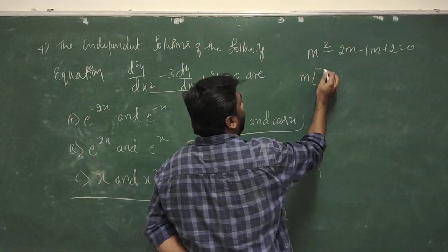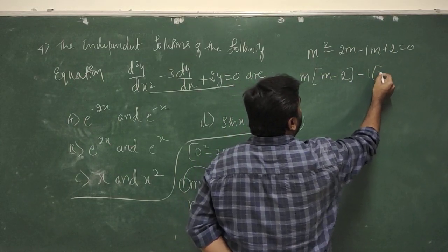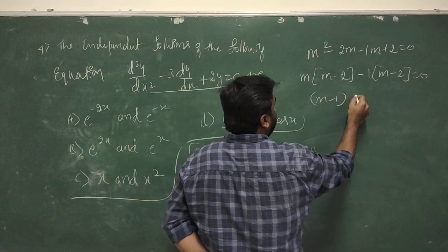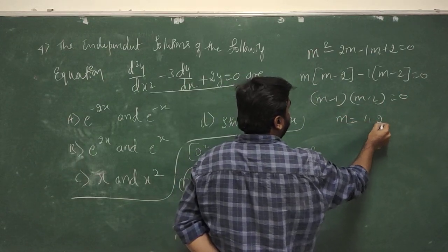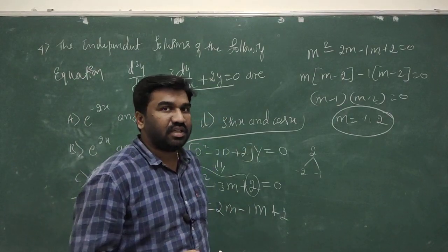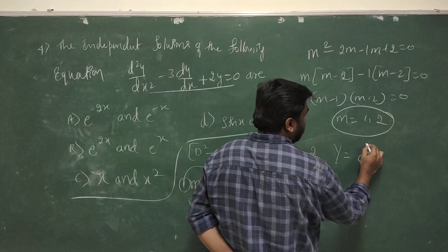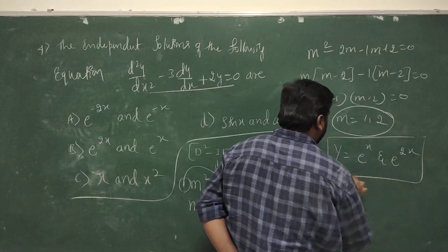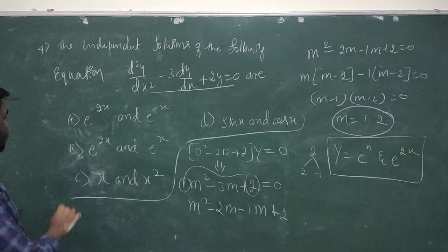This gives (m minus 1)(m minus 2) equals 0, so m equals 1 and m equals 2. The roots are real and distinct. Therefore the general solution is y equals C₁ eˣ plus C₂ e²ˣ. Option B is correct.